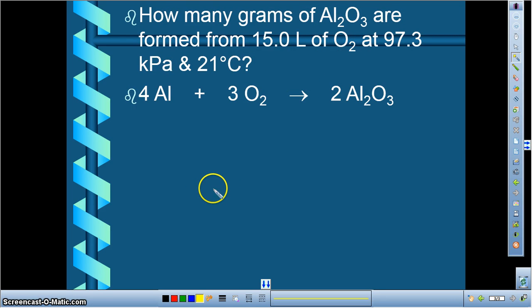Let's take a look at another example of gas stoichiometry. How many grams of Al2O3, so I want to put this down here, how many grams are formed from 15 liters of oxygen at 97.3 kPa and 21 degrees Celsius.